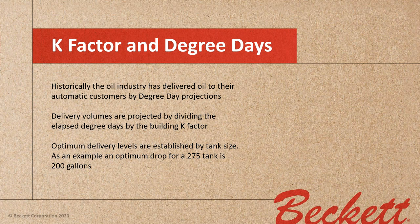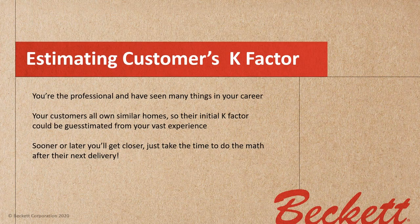Historically, the oil industry has delivered fuel oil to automatic customers by degree day projections. Delivery volumes are projected by dividing the elapsed degree days by the building K-factor. Optimum delivery levels are established by the tank size. For my example this afternoon, I'm going to assume we all have 275-gallon tanks and that the optimum drop is going to be 200 gallons. Throughout the rest of my presentation, that's the example I'm going to use.